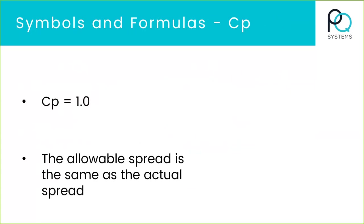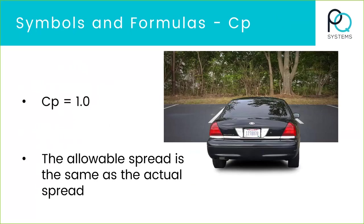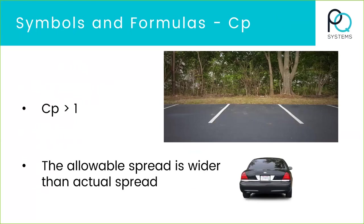Let's dive into just one of these indices: CP. It's simply the difference between your specifications and your process variability — the voice of the customer divided by the voice of the process. It's a simple formula, but let's add some more value to it. Let's say you have a process where you're required to have a CP of 1.0 or higher and a CPK of 1.0 or higher. A CP of 1 means your allowable spread is equal to the actual spread. Think of the white lines in a parking space as your specifications or your allowable spread. If your car just barely fits, that would be a CPK of 1.0.